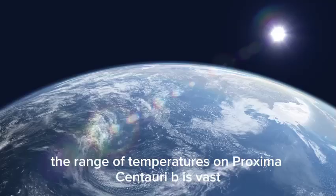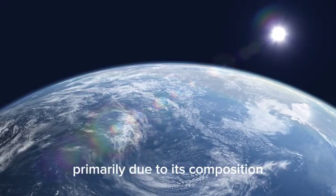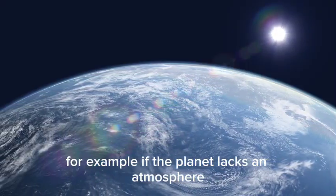The range of temperatures on Proxima Centauri b is vast, primarily due to its composition. For example, if the planet lacks an atmosphere, the temperature difference between day and night would be extreme: hot on one side and frigid on the other.